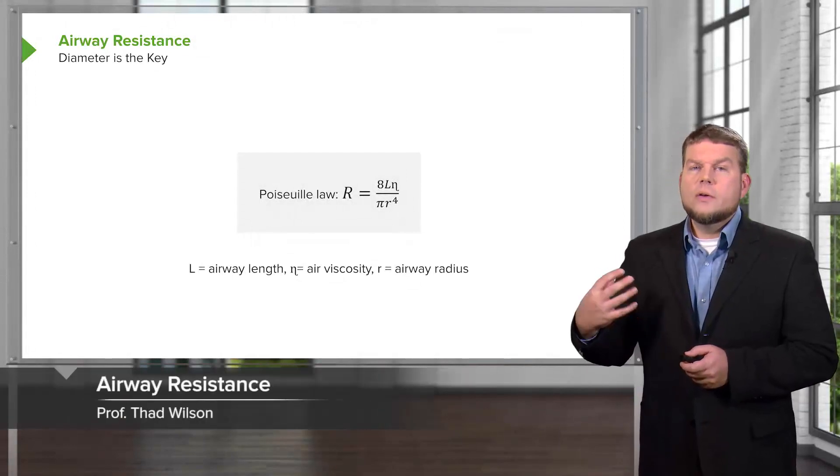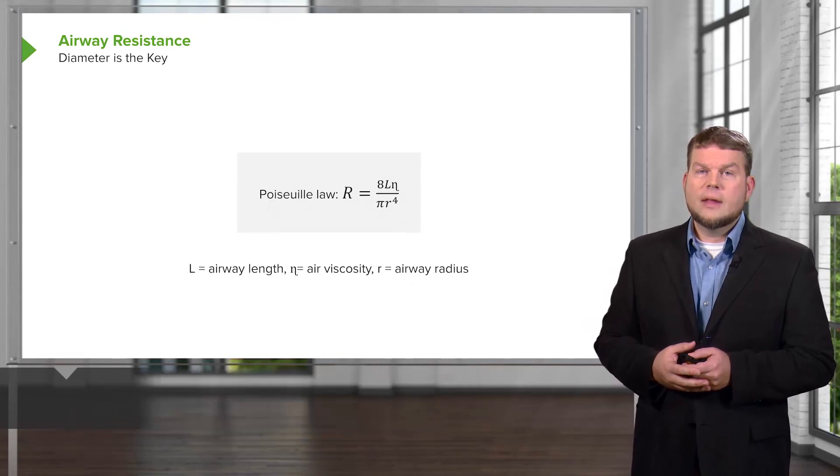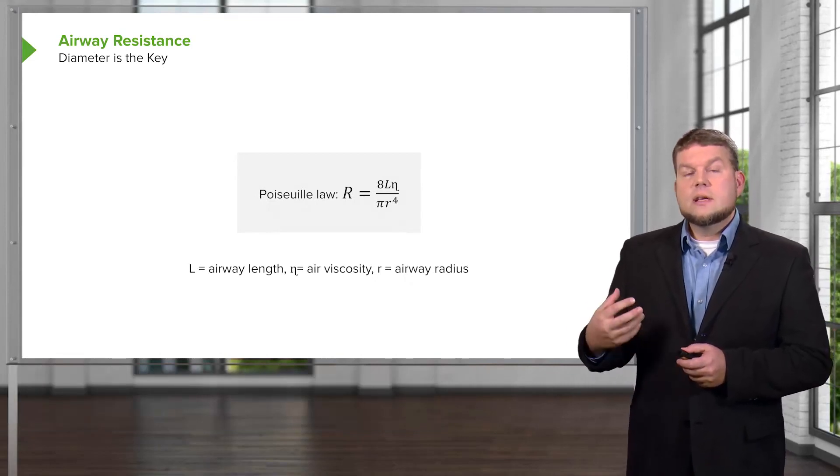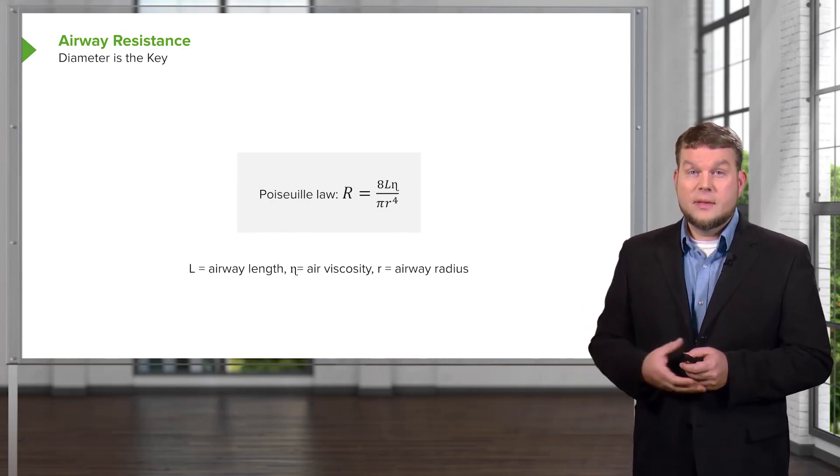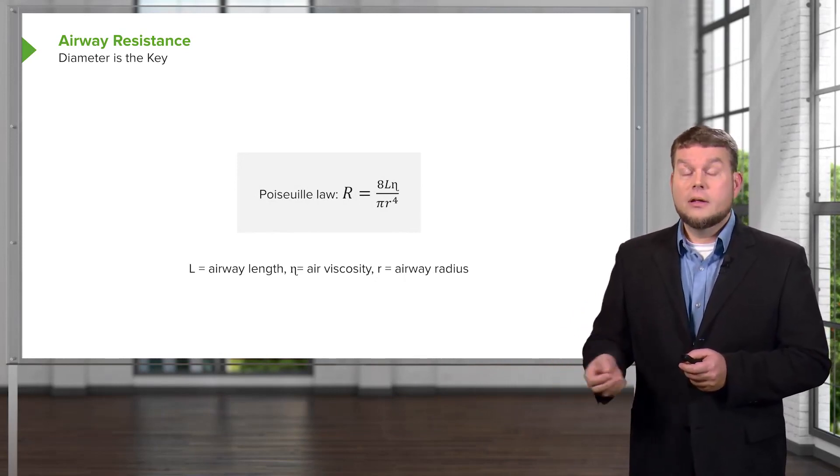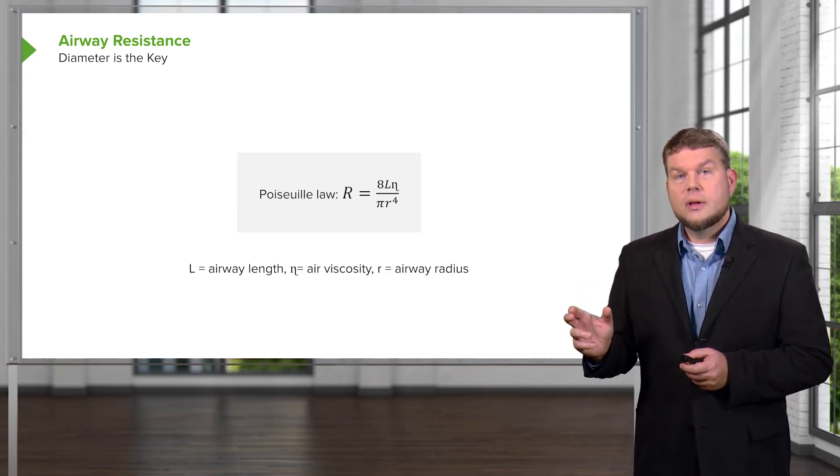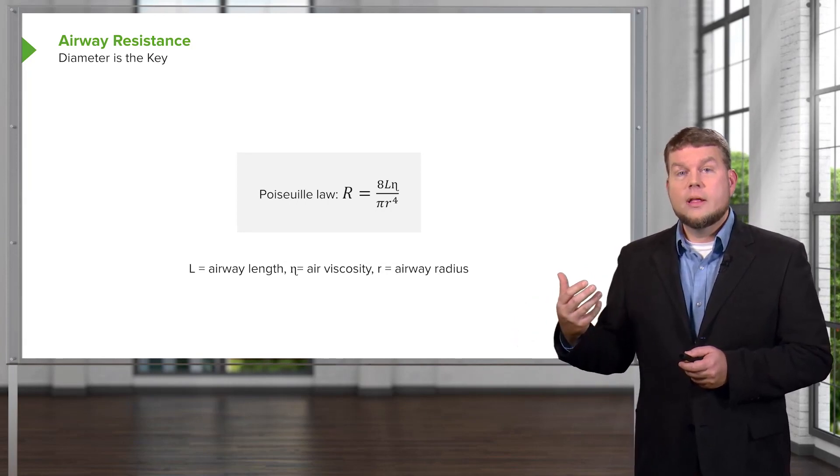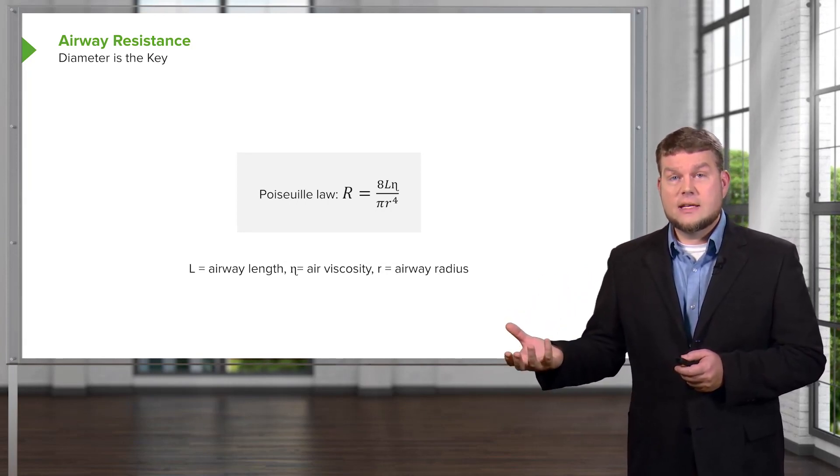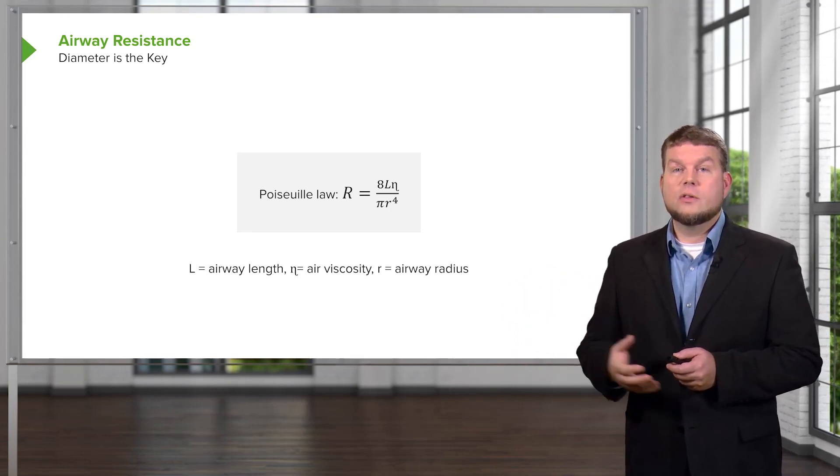Now, what involves the kind of resistance to airflow? Airflow resistance is based upon a specific law of tubes. In this Poiseuille's law, resistance is eight times the length of the tube times a factor which accounts for the air viscosity, divided by pi times radius raised to the fourth power.